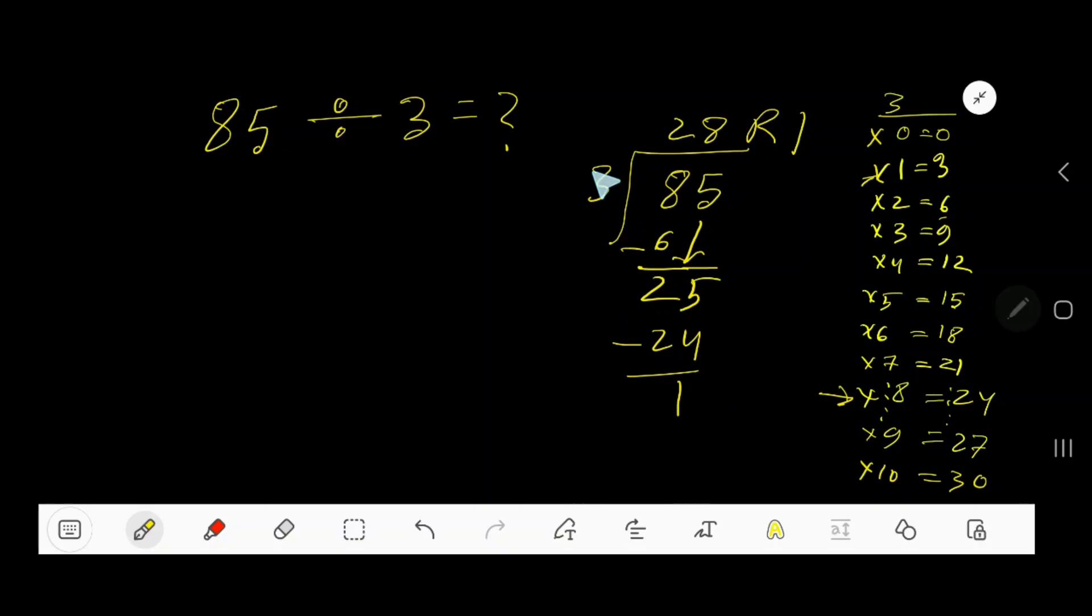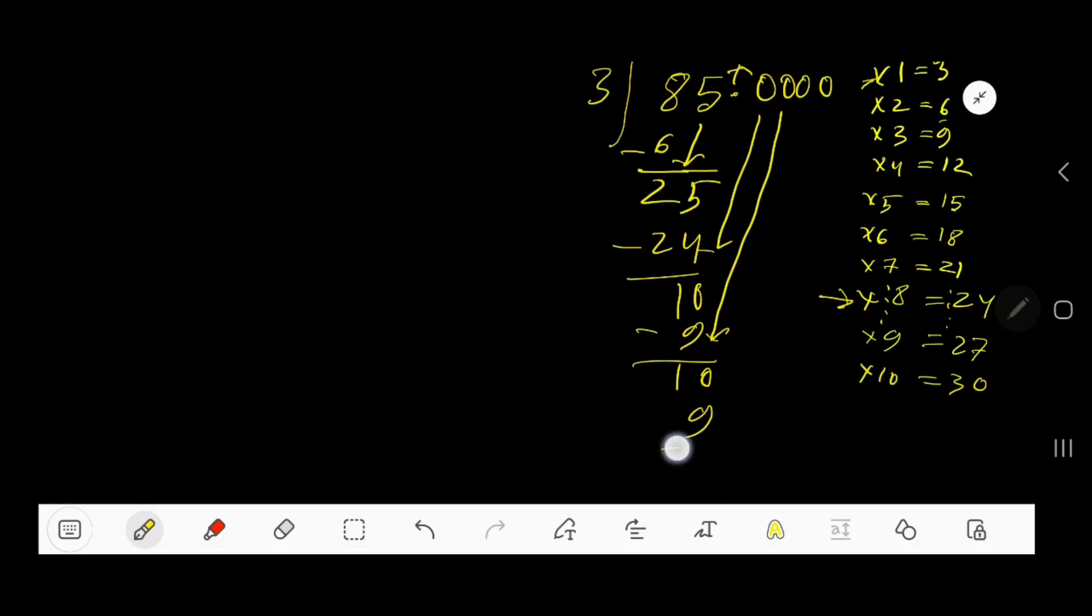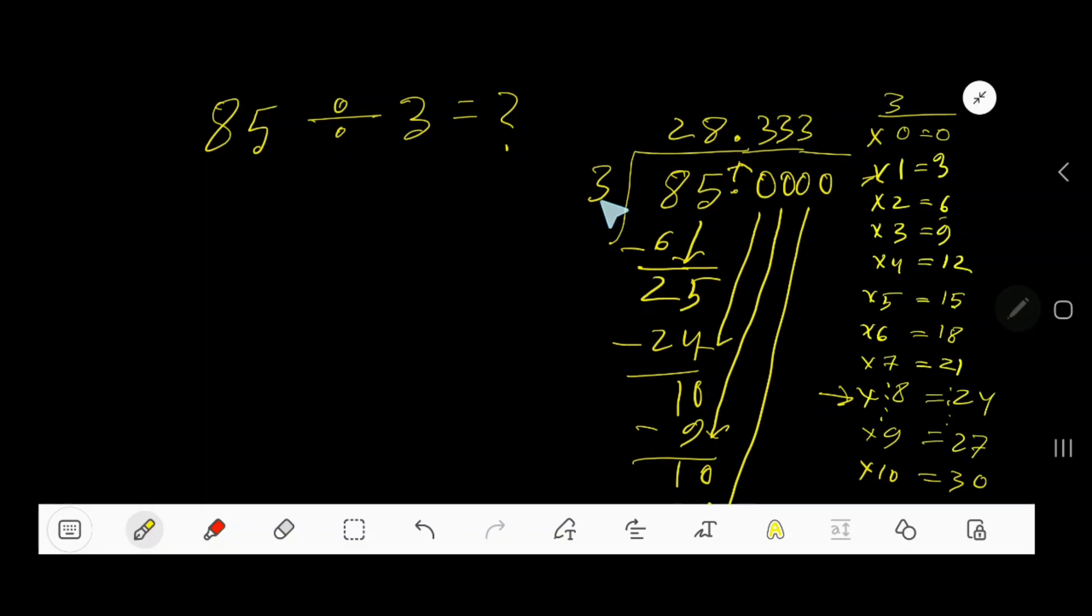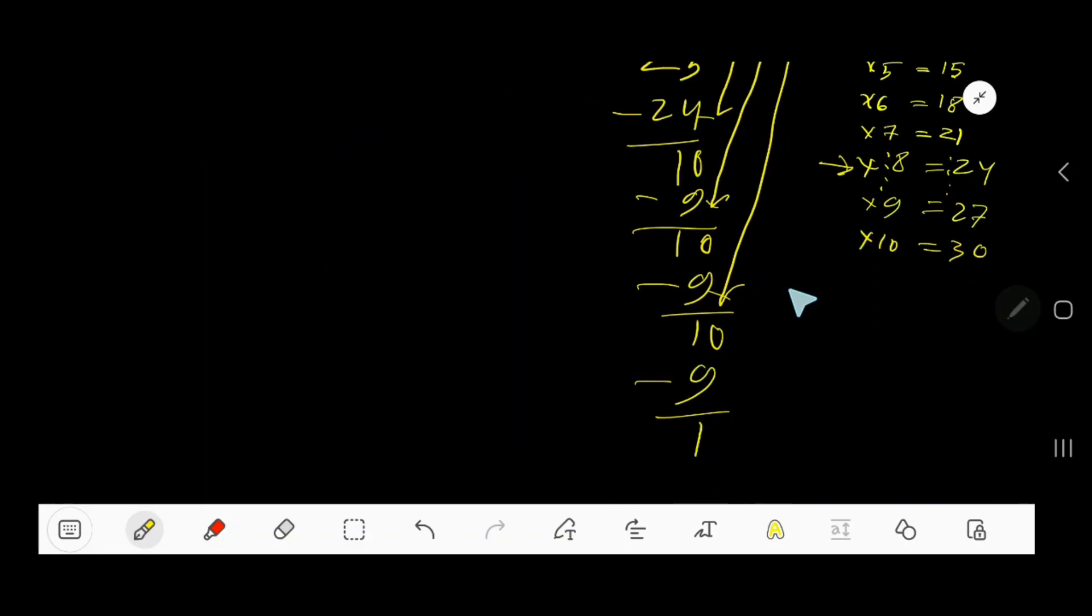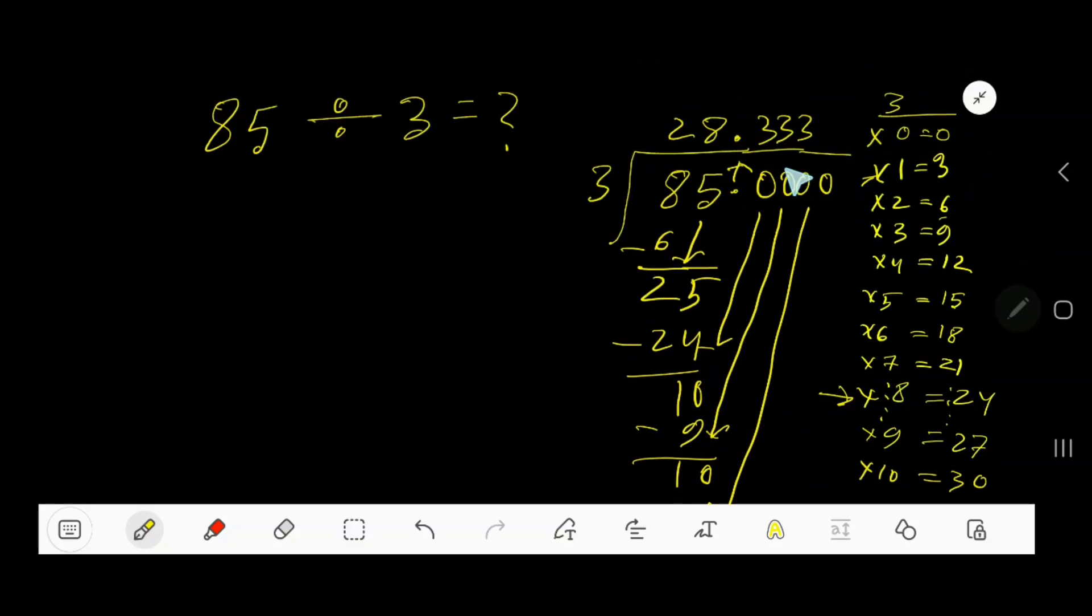The remainder is always less than the divisor. If you want to write your answer in decimal form, then take your decimal and add number of zeros. Bring down the first zero. Before this zero, there is a decimal. The decimal must come to the quotient directly. 3 goes into 10 how many times? 4 times equals 12, which is greater, so 3 times. 3 times 3 equals 9. Subtract 1. Bring down another zero. 3 goes into 10. 3 times 3 equals 9. Subtract 1. You can bring down more zeros, but since we have gotten 3 digits after the decimal, we can stop.